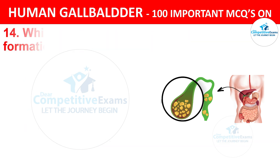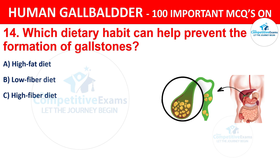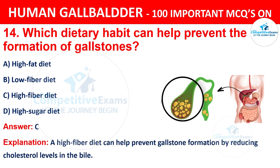Question 14: Which dietary habit can help prevent the formation of gallstones? The options are: A) High fat diet, B) Lower fiber diet, C) High fiber diet, D) High sugar diet. The correct answer is C, high fiber diet. A high fiber diet can help prevent gallstone formation by reducing cholesterol levels in the bile.